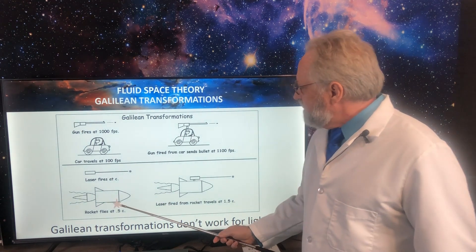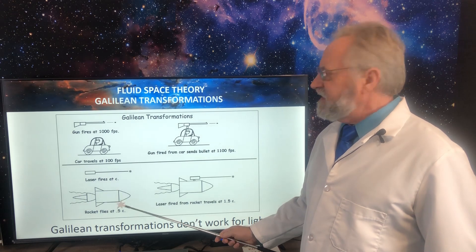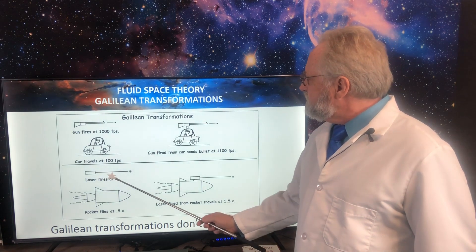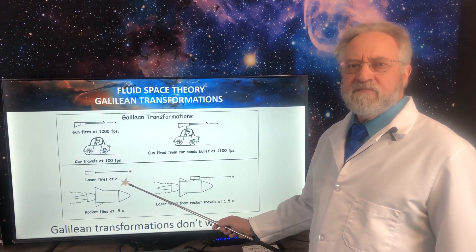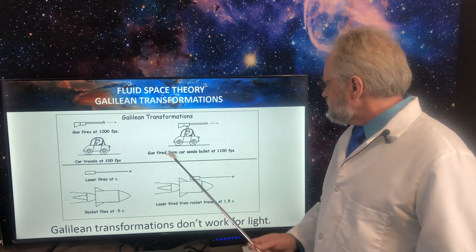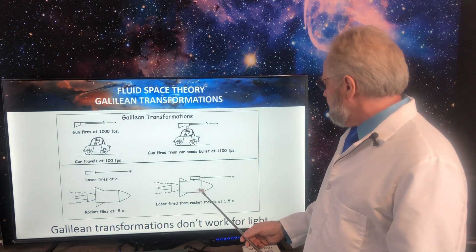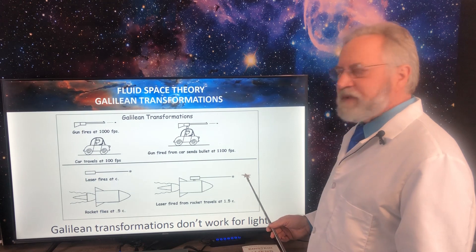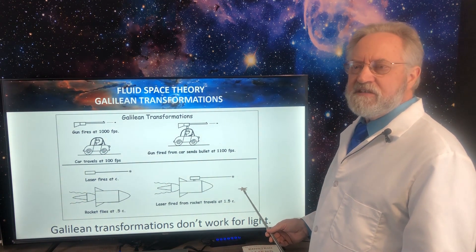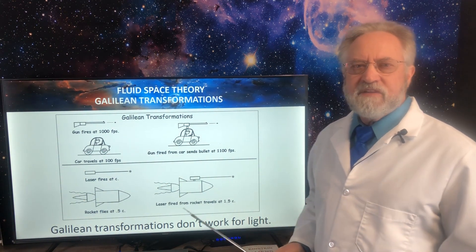Well, suppose now you had a rocket that flies at half the speed of light, 0.5 C, and a laser that fires at the speed of light, which is called C. So you mount the laser on the rocket and you would expect the laser beam to be traveling at 1.5 C. Well, it doesn't work that way.